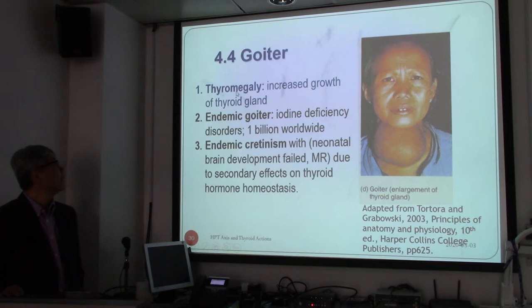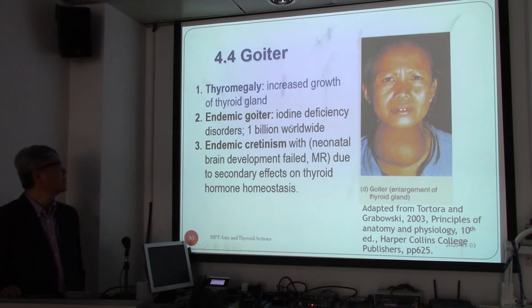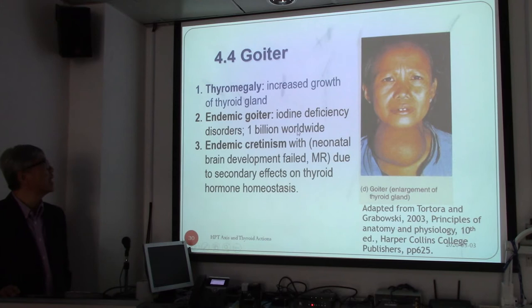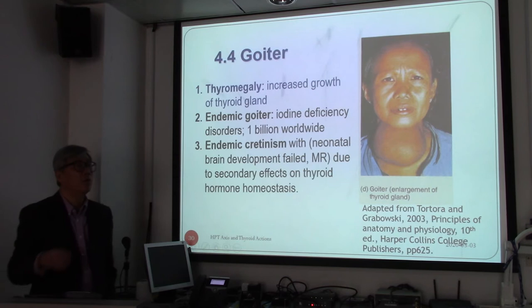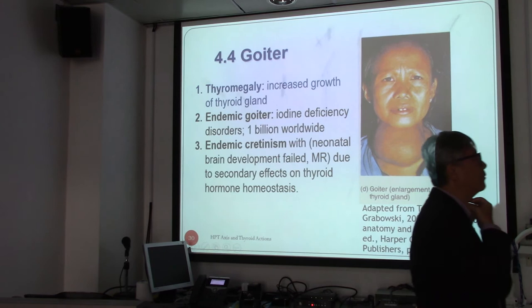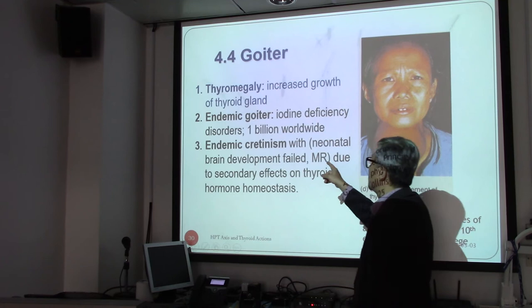We also talked about goiter — an enlargement of the thyroid in the neck region. It's an endemic goiter, actually affecting around 1 billion people worldwide. It is mainly related to iodine deficiency. The cells keep growing in order to produce thyroid hormone, but there's not enough iodine, so the cells keep growing — and that is goiter.